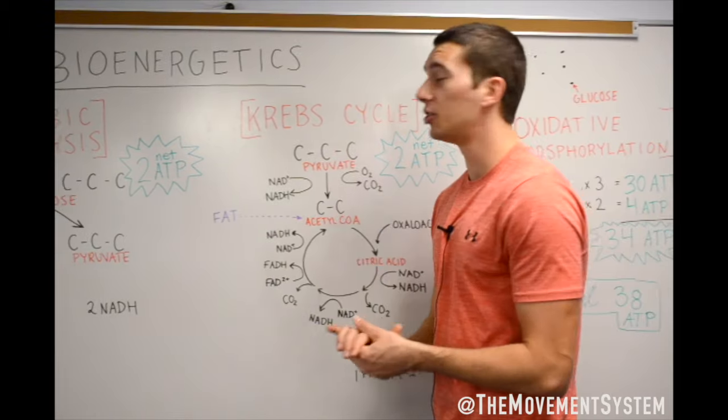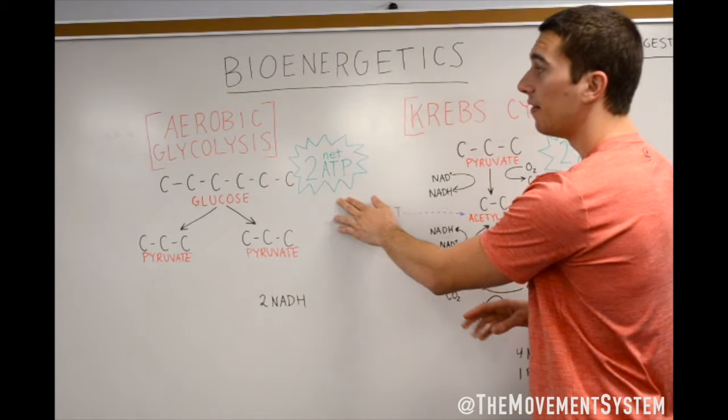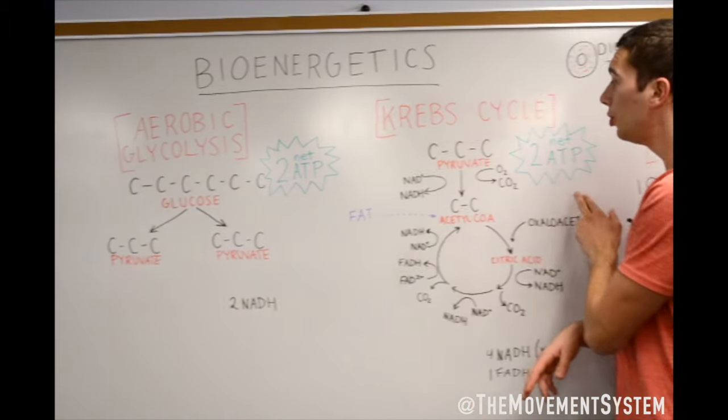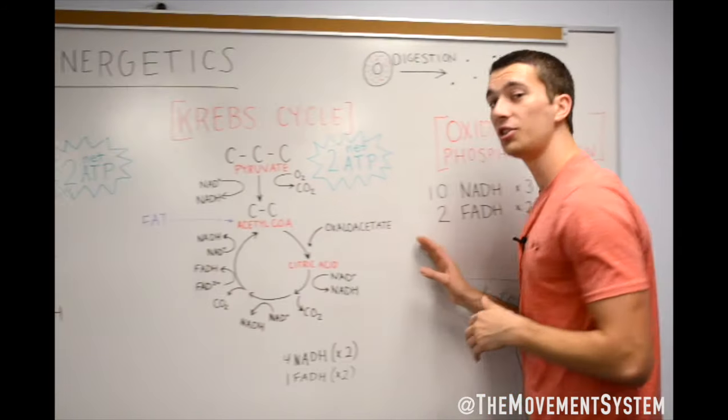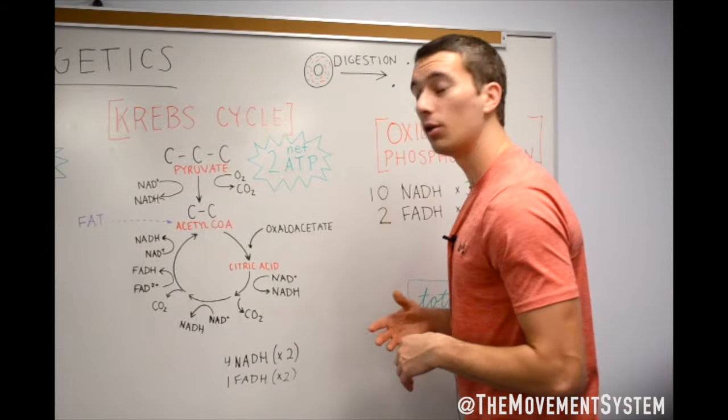So to back up big picture here, we got two ATP from glycolysis, we have two ATP from the Krebs cycle, and then now we're going to continue with oxidative phosphorylation, and that's really going to be where we're going to get most of our ATP.